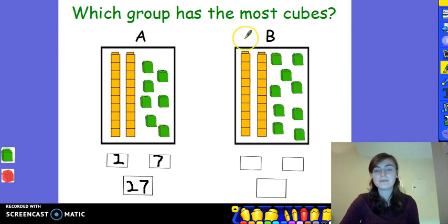Now, let's try Group B. I can see 1, 2 tens and 1, 2, 3, 4, 5, 6, 7, 8, 9 cubes or 9 ones in Group B. I know that there are 29 cubes in Group B. So, which group has the most cubes? You're right. It's Group B because 29 is greater than 27. Super work.